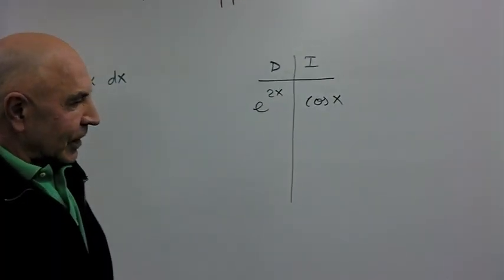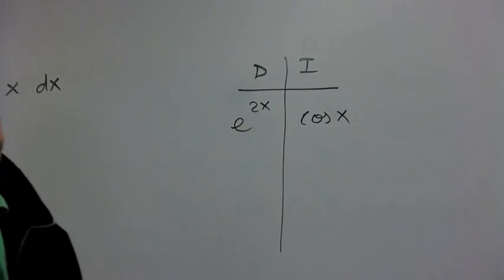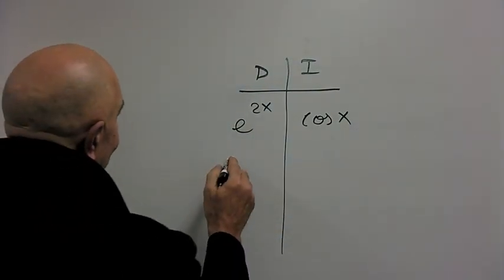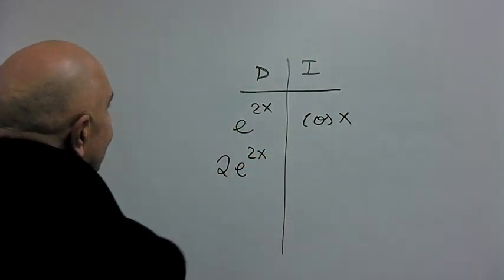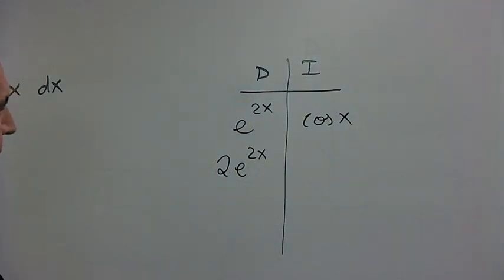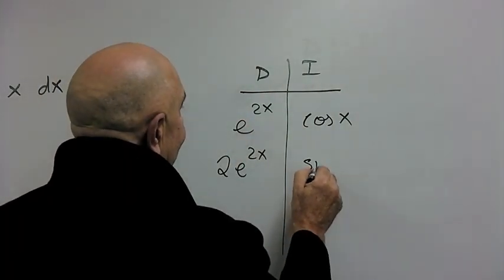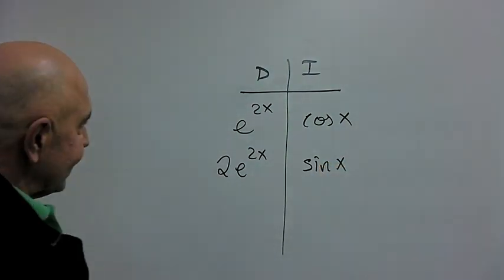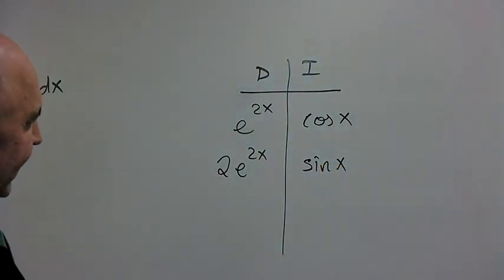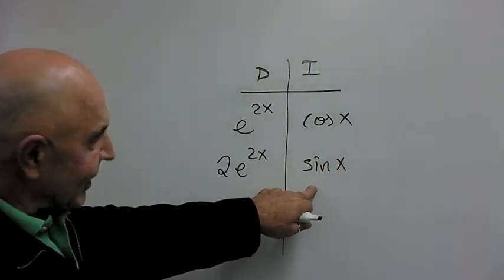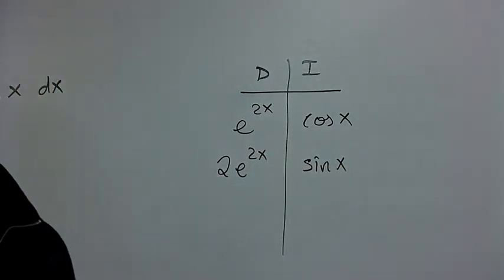Now, what happens when you start differentiating e to the 2x? When you differentiate it once, it becomes twice e to the 2x. When you integrate cosine, it becomes sine, just simply sine of x. And this product doesn't seem any simpler than that product. That's not a very good sign. Getting a little worried here.